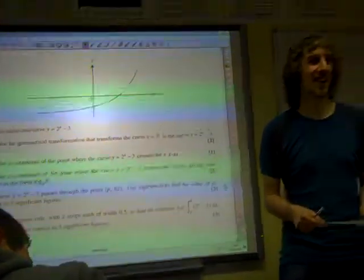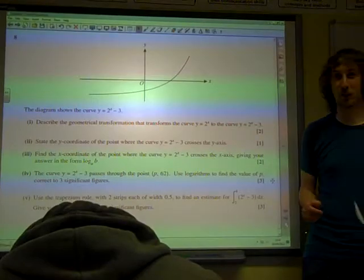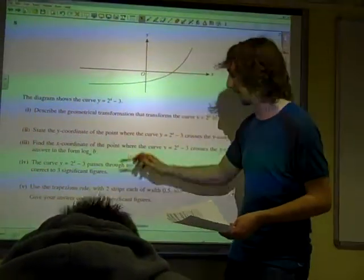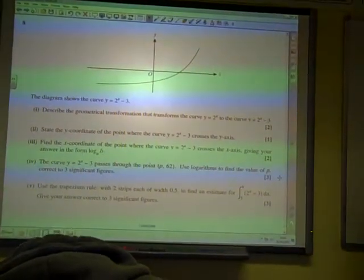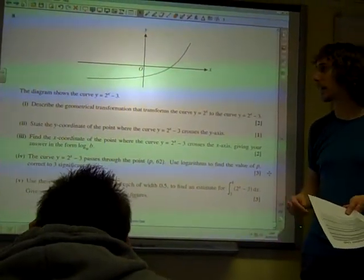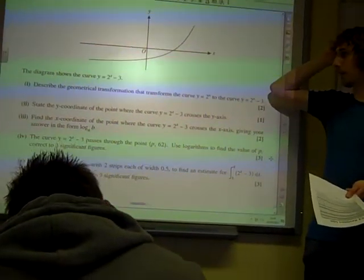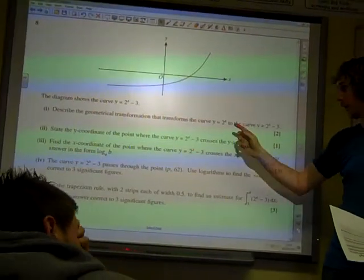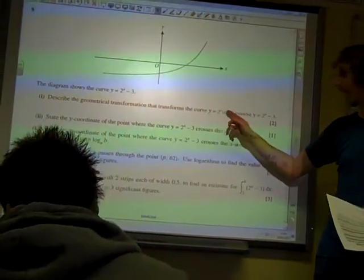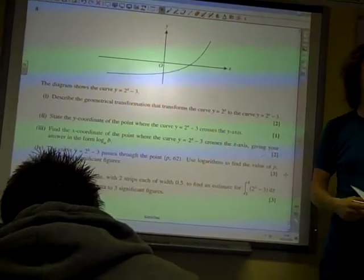This is the question on logarithms with a bit of trapezium rule thrown in for exciting nuts. The graph shows y equals 2 to the x minus 3. Describe the geometrical transformation that transforms y equals 2 to the x to the curve 2 to the x minus 3.